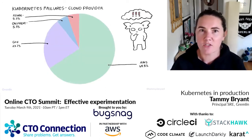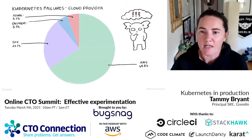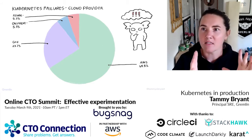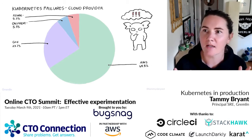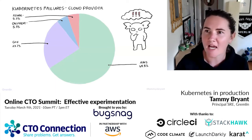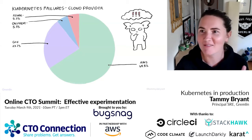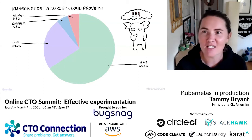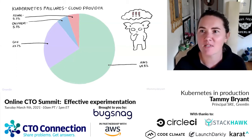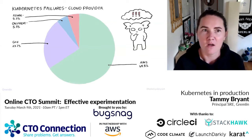I also like to break the data down by cloud provider. As an SRE, I really like to use the Pareto principle — the 80-20 rule — to understand where I should focus my efforts, because you don't want to be doing long-tail work first. I'd rather focus on the top 20% of issues that cause 80% of the problems.